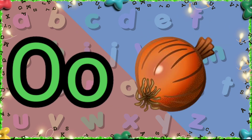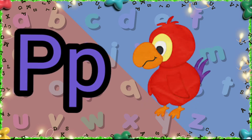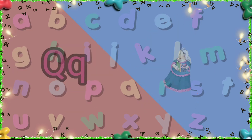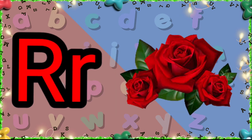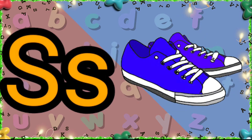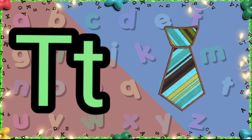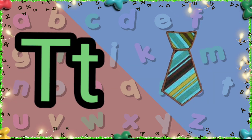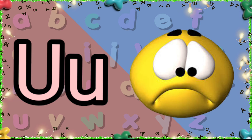O is for onion. P is for parrot. Q is for queen. R is for rose. S is for shoes. T is for tie. U is for upset.